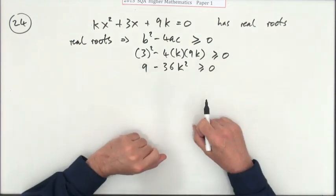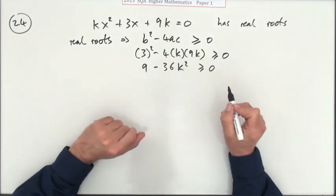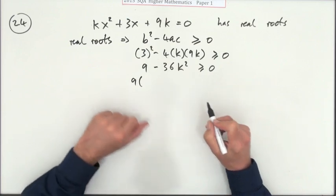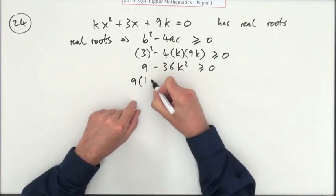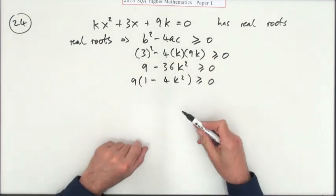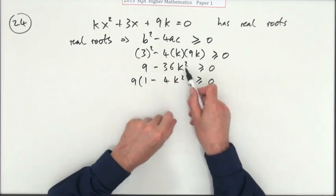Now you can safely divide that by 9 because I'm not interested in preserving the value of that expression, but if you feel threatened into keeping it, I'll just leave it in there just now. That's 1 - 4k² is greater than or equal to zero.